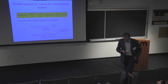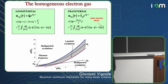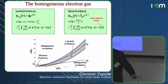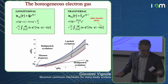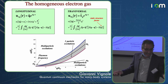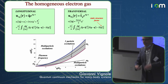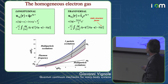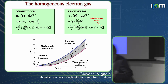A trivial application of this formalism is the homogeneous electron gas. I say trivial because it is homogeneous — the eigenmodes are plane waves characterized by a wave vector q, and you find simply a frequency for each q. It's interesting to see what this approximation does in this case.